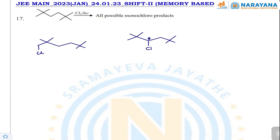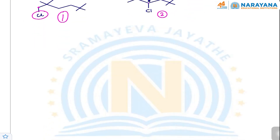The next question asks for the monochloro products when a compound is treated with Cl2. There are only two different types of hydrogen in the molecule. Monochlorination at the first position gives one product with no stereocenters (1 product). Monochlorination at the second position creates a chiral center — the compound is optically active, giving two enantiomers. Total products formed: three.